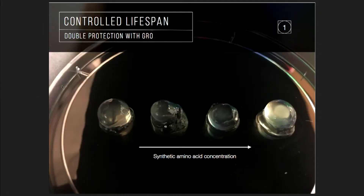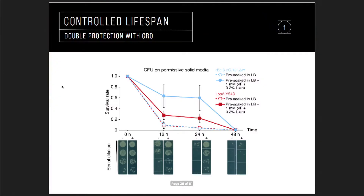Now talking about how to control lifespan. We work together with a lab at Yale University that has a strain which only survives when given artificial amino acids. Above a certain threshold the bacteria can grow, but below it they cannot survive. Using this strategy you can tune the concentration of this chemical and control how long they live. In this case, after 48 hours they are almost not viable in the device.